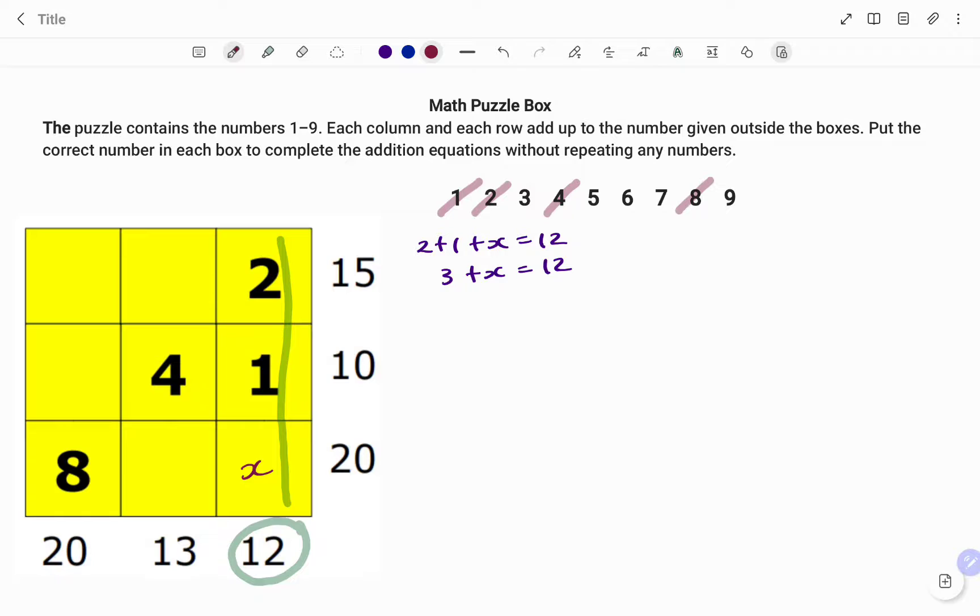Using the balance method, I'm going to take out 3 from both sides. What I'm left with is 3 minus 3, that's 0. I'm left with x equals 12 minus 3, that's 9. So for my missing box, the value is 9.